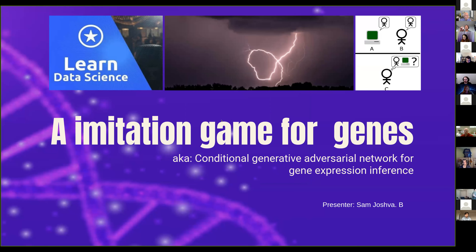I took this really long paper — 'Conditional Generative Adversarial Network for Gene Expression Inference' — and gave it the more human-readable name 'An Imitation Game for Genes.' This plays nicely with Alan Turing's 1950 study on the imitation game, where you have to distinguish between two people and one acts as a discriminator.